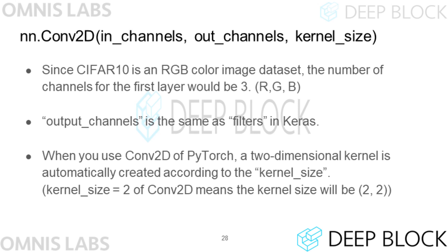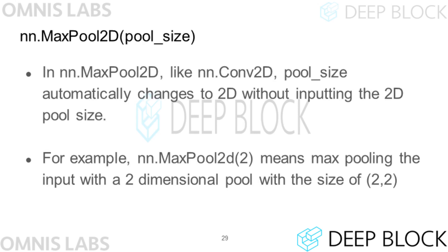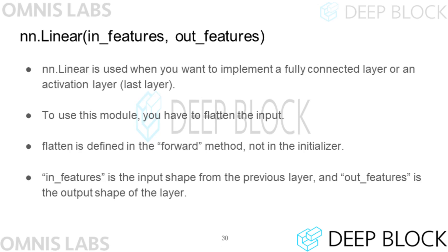Since CIFAR-10 is RGB color image data, the value of in_channels of nn.Conv2d must be set to 3. You can think of out_channels of nn.Conv2d as the same parameter as filters of Conv2d in Keras. Unlike Keras, in PyTorch a two-dimensional kernel with the same width and height is automatically created even if you put a constant in kernel_size. Like the Conv2d layer, pool size is automatically converted to two dimensions in nn.MaxPool2d even if it is entered as a number. nn.Linear is used to implement a fully connected layer, similar to a Dense layer in Keras. The input to this layer must be one-dimensional, so if you want to pass two-dimensional data to this layer, you have to flatten the data. However, unlike Keras, flattened layers are added in the forward method.